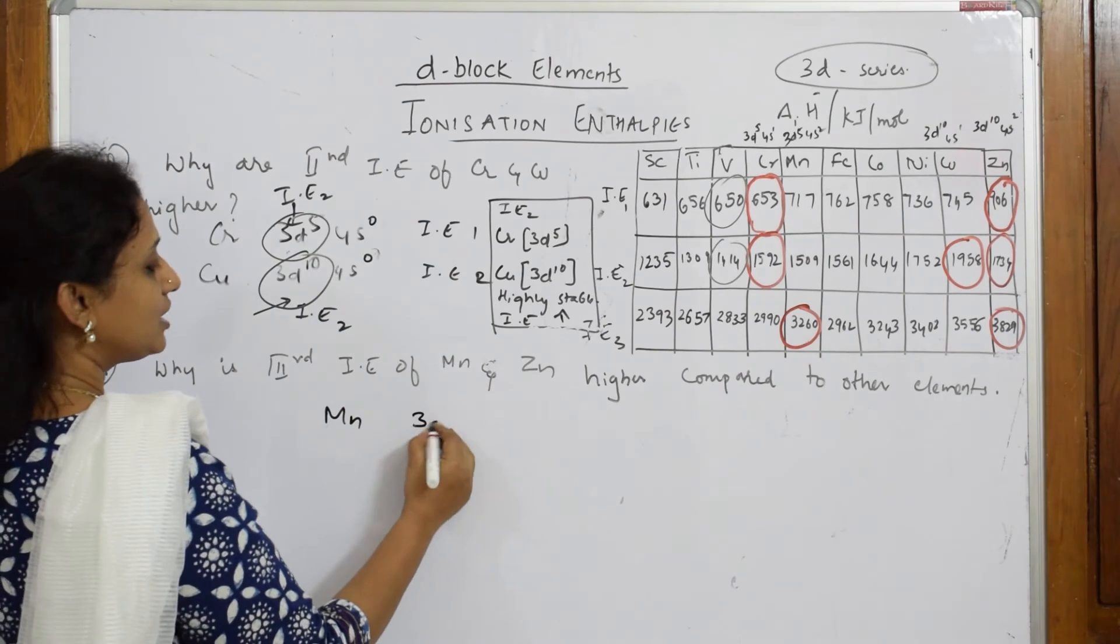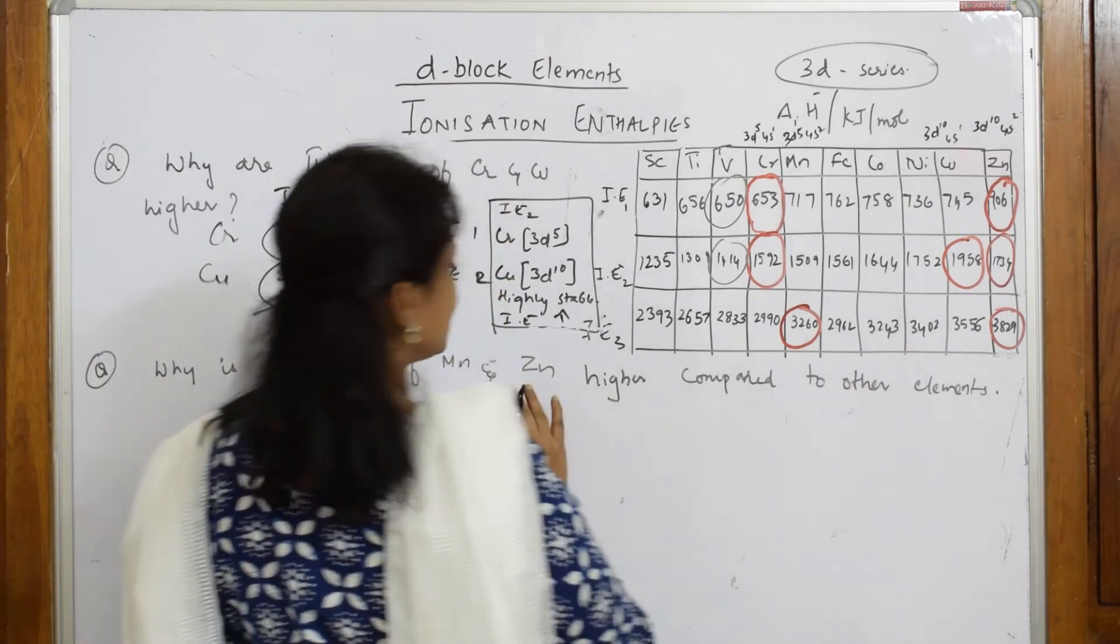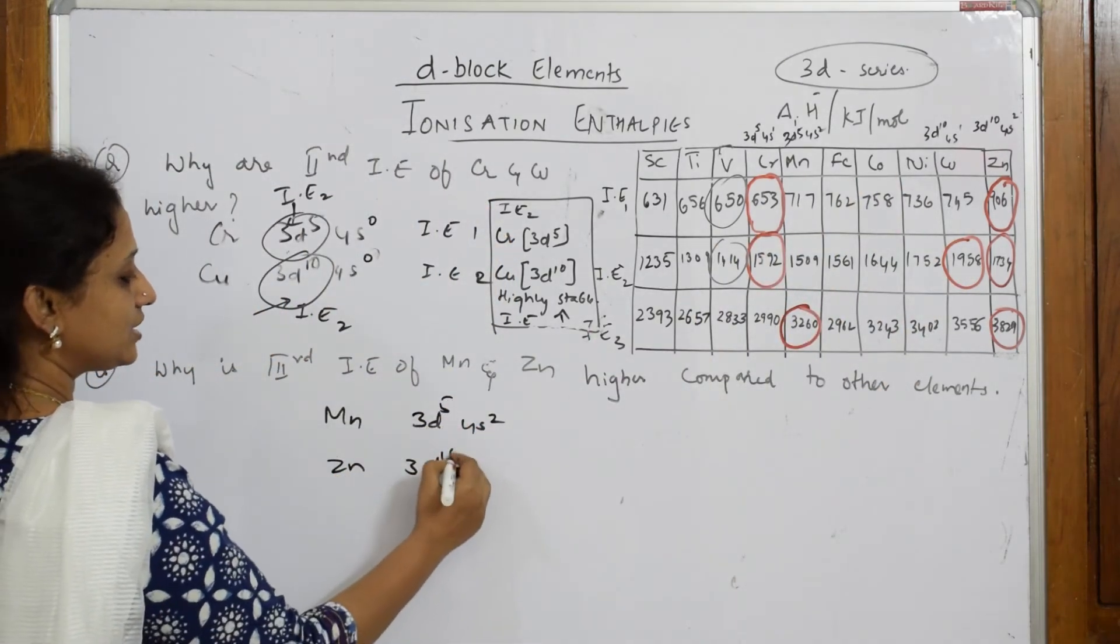Configuration is 3d5 4s2. Then zinc, zinc again it is 3d10 4s2. 3d5 4s2, 3d10 4s2.